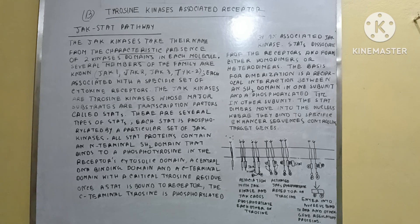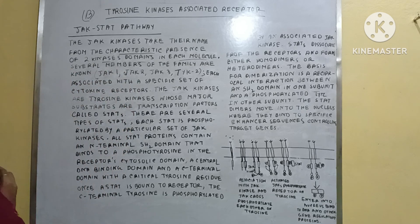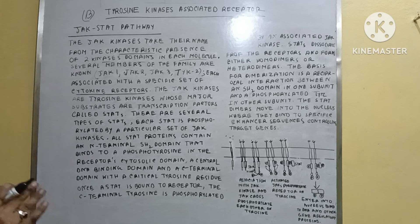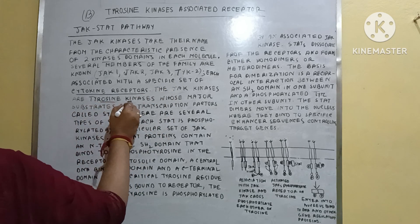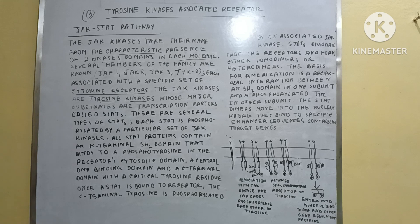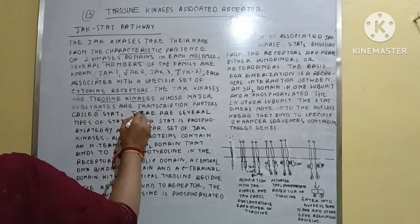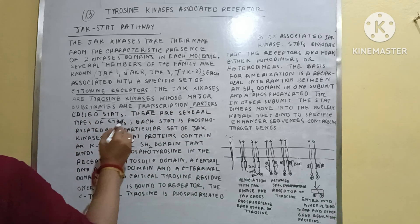Each JAK is associated with a specific set of cytokine receptors. JAK kinases are tyrosine kinases whose major substrates are transcription factors called STATs. So the controlling or activity-regulating substance of JAK kinases is the STAT proteins.